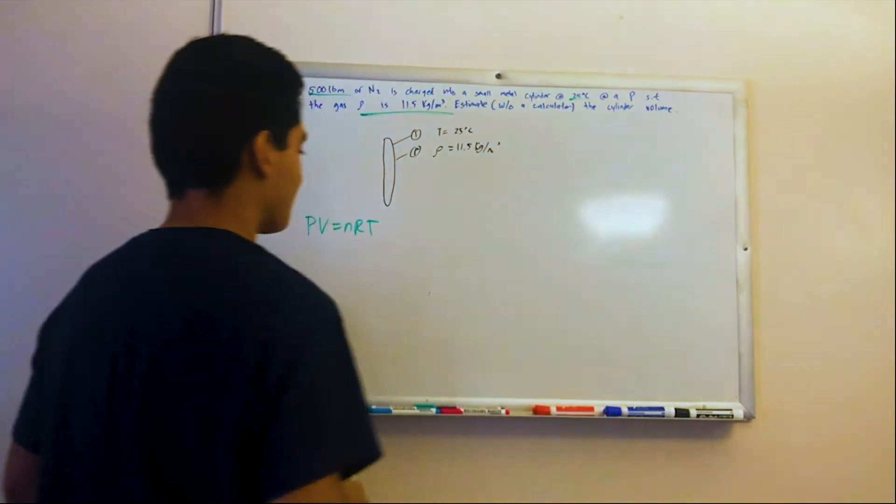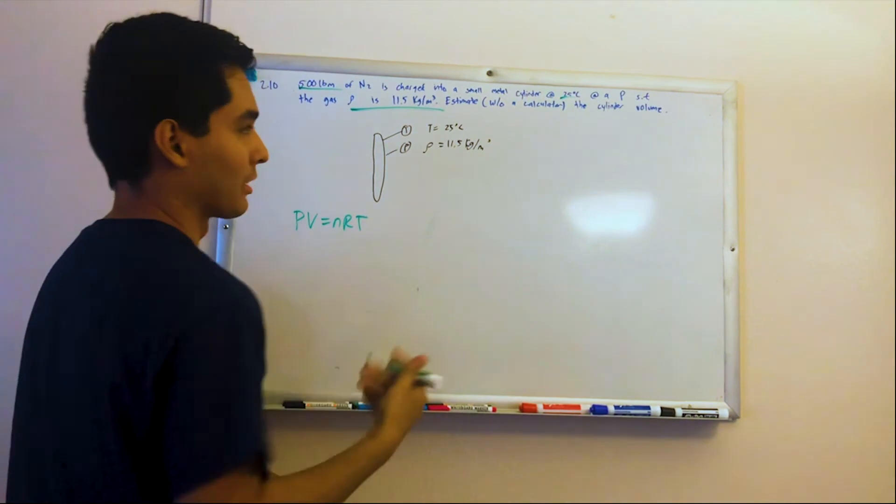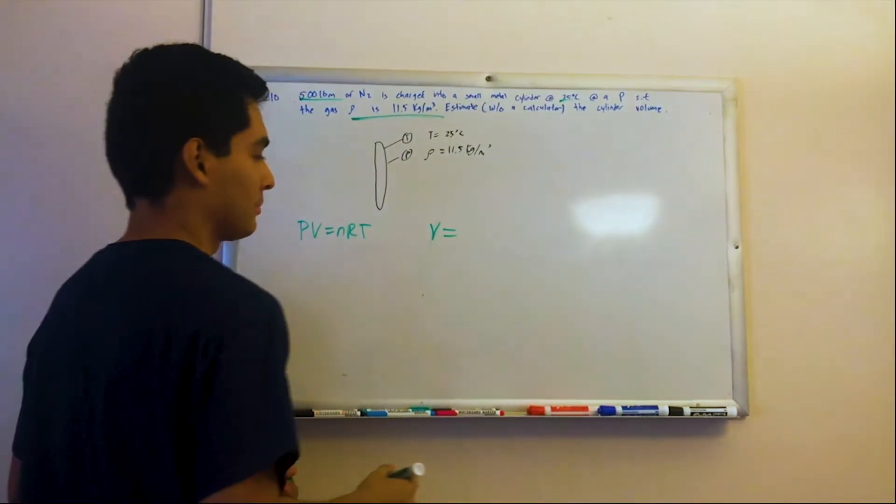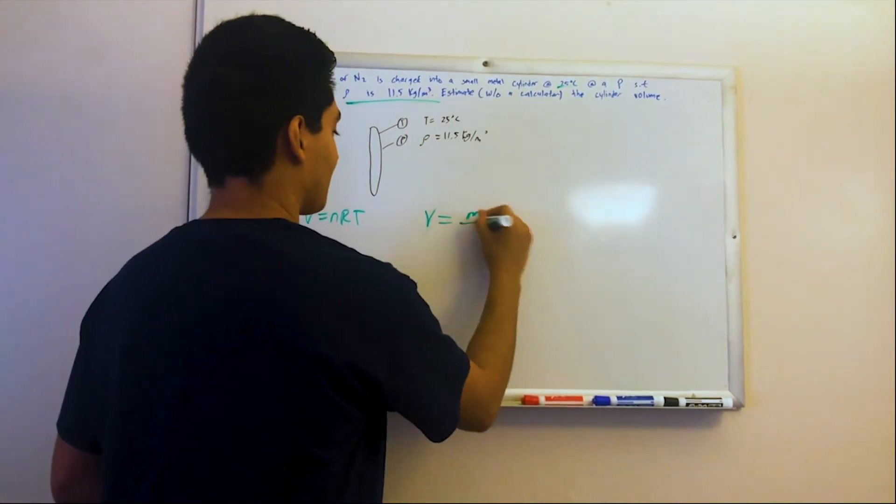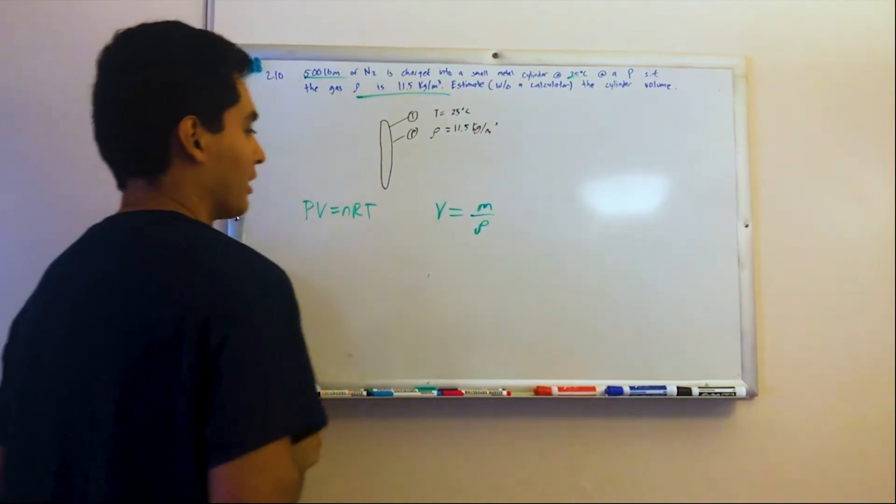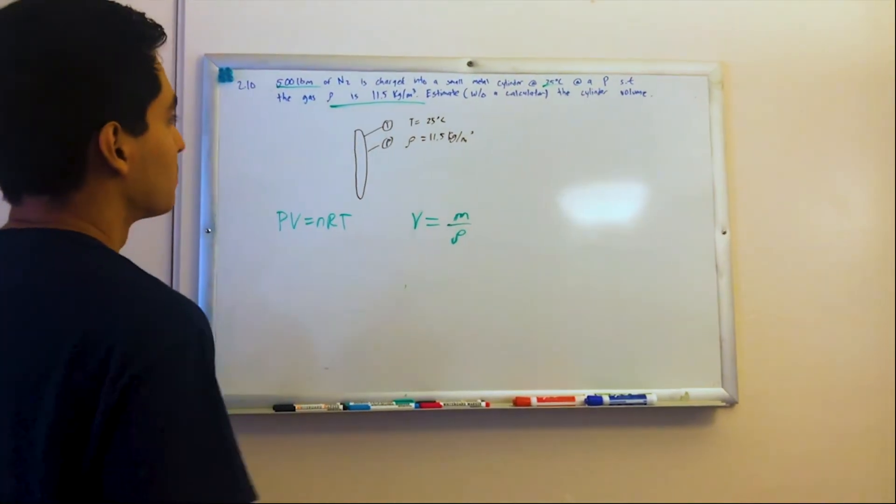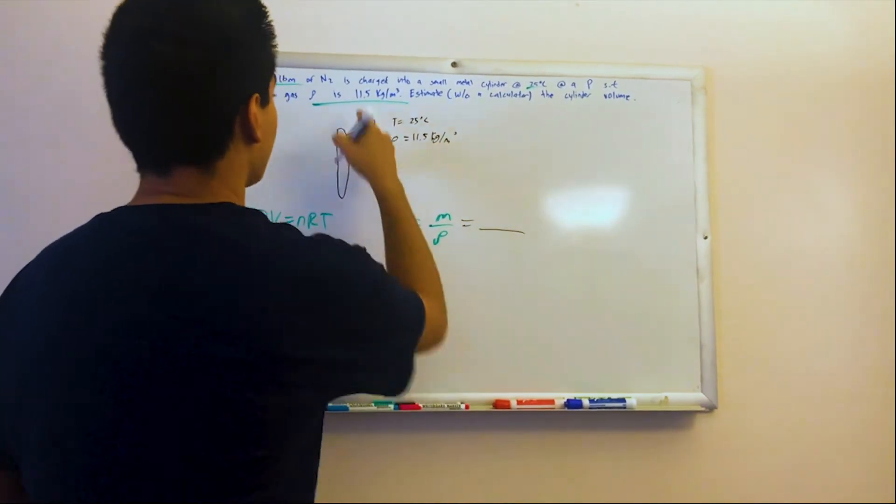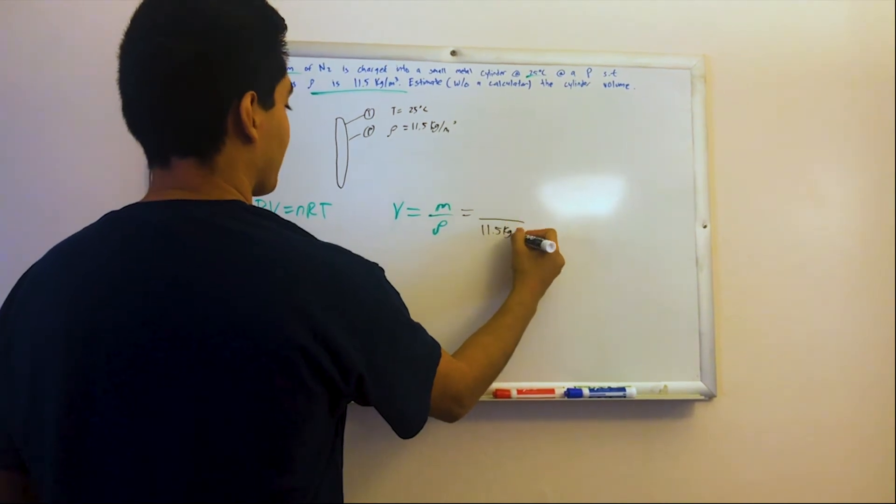So we're just going to simply use density equals mass over volume, and we want to estimate the cylinder volume. So volume is going to be mass over density. That's right. Mass over density. Alright, so we can just kind of plug stuff in. So the density is 1.5 kilograms per meter cubed.